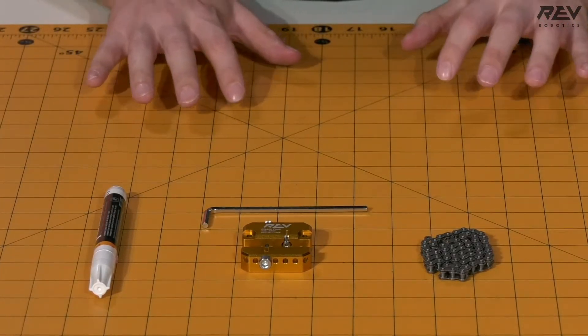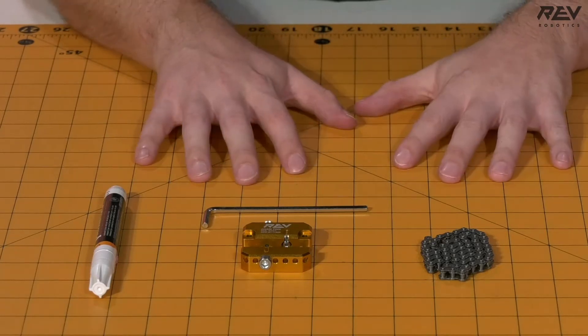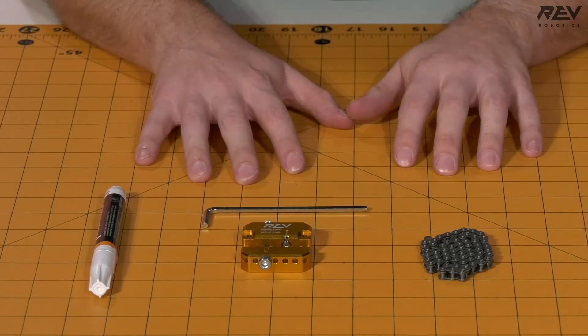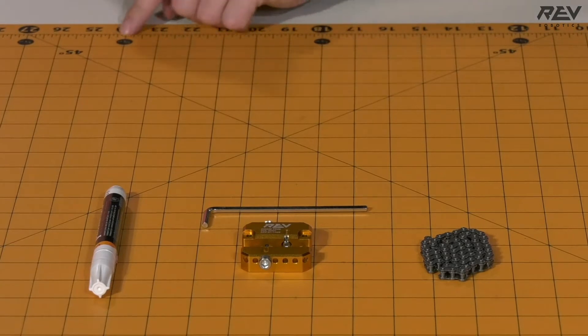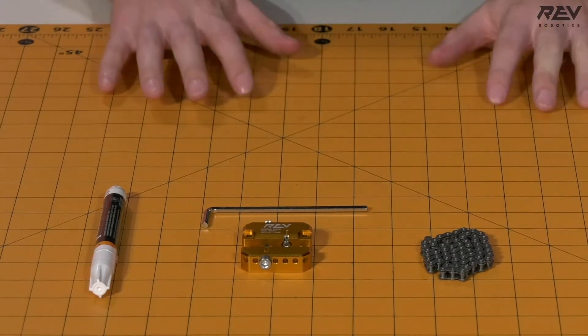It's also helpful to have something as a measuring device. This mat that we have here, each one of these squares is about an inch, and so we'll be able to measure our chain using this mat.